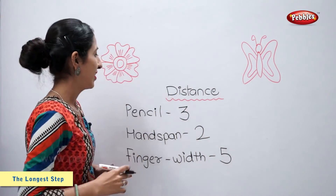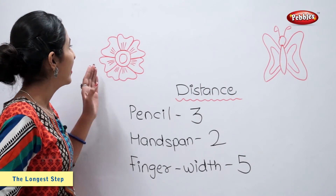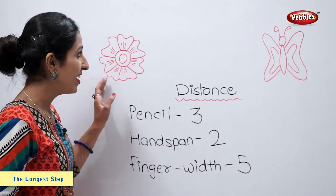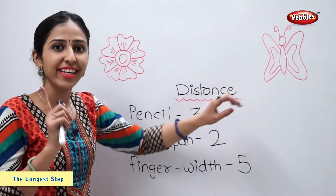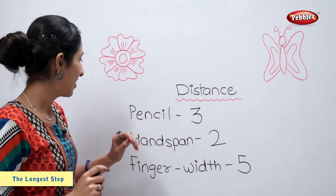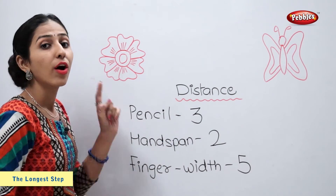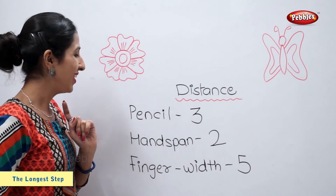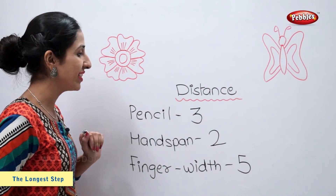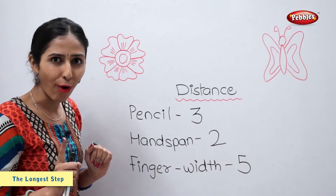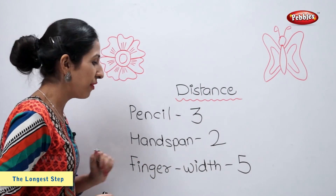So the distance between this flower and the butterfly is three pencils or two handspans or five finger width.